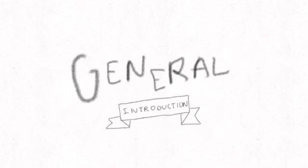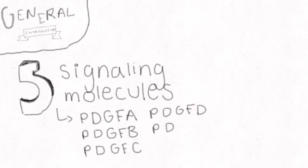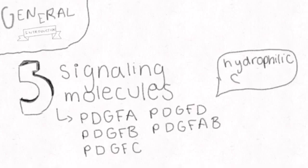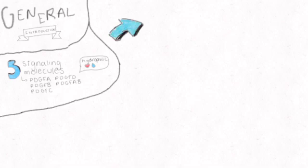In PDGF signaling, five different hydrophilic signaling molecules—PDGF-A, PDGF-B, PDGF-C, PDGF-D, and PDGF-AB—bind to two different tyrosine kinase receptor molecules: PDGF-R-alpha and PDGF-R-beta.